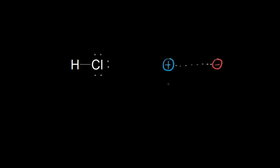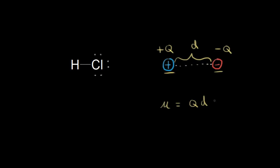To explain what a dipole moment is, let's look at a positively charged proton some distance away from a negatively charged electron, separated by a distance d. A proton and an electron have the same magnitude of charge Q, equal to 1.6 times 10 to the negative 19. A proton has a positively charged Q, and an electron has a negatively charged Q. The dipole moment, symbolized by the Greek letter mu, is equal to the magnitude of that charge Q times the distance between those charges d. So mu is equal to Q times d.